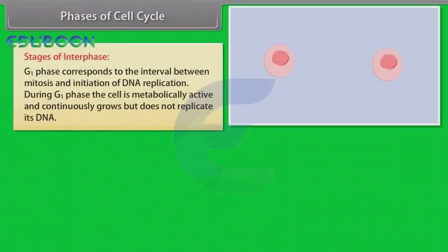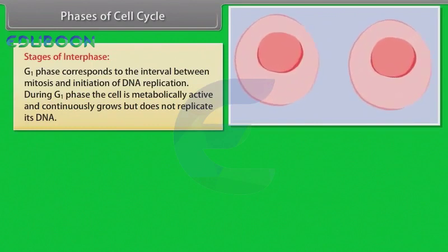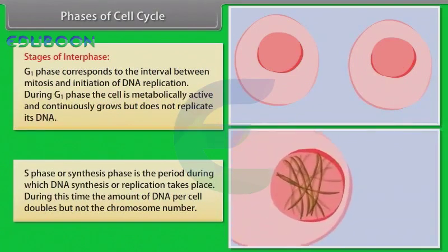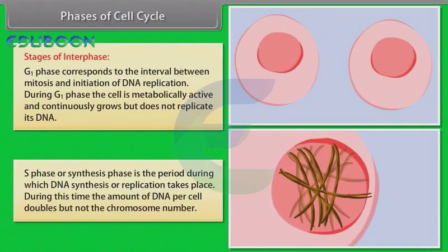G1 phase corresponds to the interval between mitosis and initiation of DNA replication. During G1 phase, the cell is metabolically active and continuously grows but does not replicate its DNA. S phase or synthesis phase marks the period during which DNA synthesis or replication takes place. During this time, the amount of DNA per cell doubles but not the chromosome number.